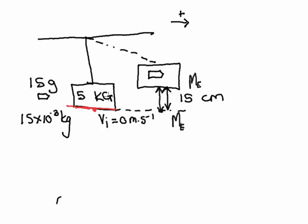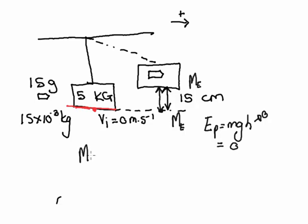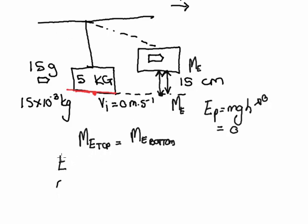If this is my reference point where the red line is, the potential energy at that point must be zero, because the formula for potential energy is mgh, where h equals zero. Therefore, my total potential energy is zero at the bottom. The mechanical energy at the top is going to be equal to the mechanical energy at the bottom. We can expand this: kinetic energy at the top plus potential energy at the top equals kinetic energy at the bottom.